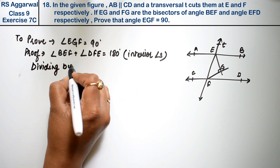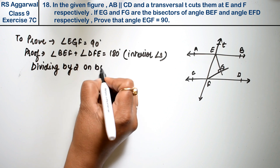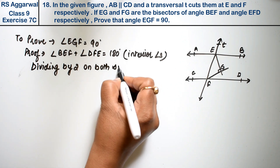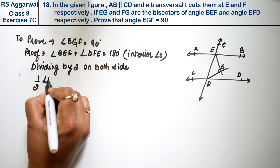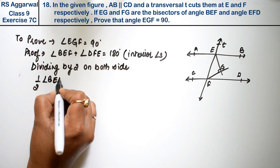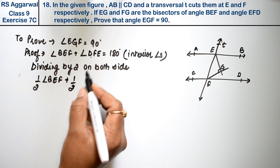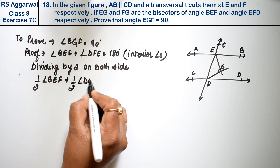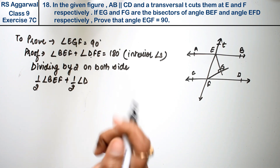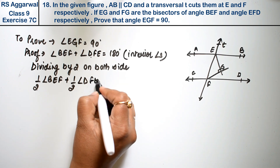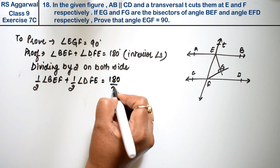Now dividing both sides by 2, we get: half of angle BEF plus half of angle DFE equals 180 divided by 2, which is 90 degrees.